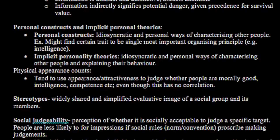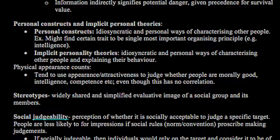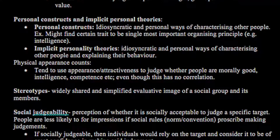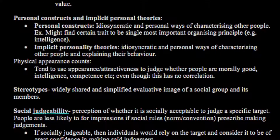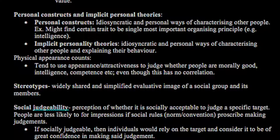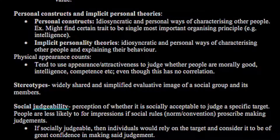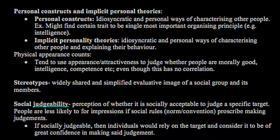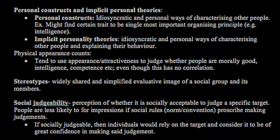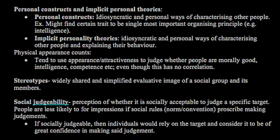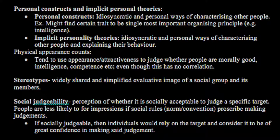We have a tendency to use appearance or attractiveness to judge whether people are morally good and intelligent or competent, even though there is basically no correlation supporting this. Stereotypes are widely shared and simplified evaluative images of a social group and its members. Social judgeability is the perception of whether it is socially acceptable to judge a specific target. People are less likely to form impressions if social rules or norms prescribe against making judgements. If one is considered socially judgeable, individuals would rely on the target and consider judgements of great confidence.